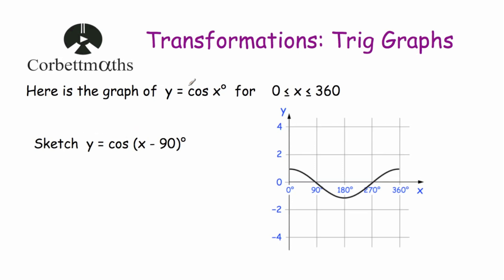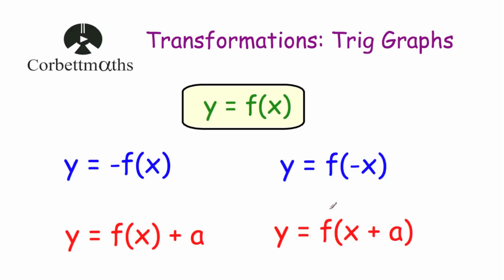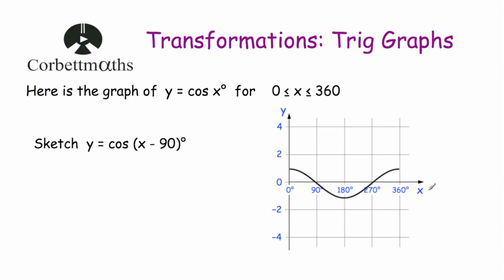Next, we've been asked to sketch y = cos(x - 90°), with minus 90 inside the brackets — a translation 90° to the right. The point (0°, 1) moves to (90°, 1); (90°, 0) moves to (180°, 0); (180°, -1) moves to (270°, -1); (270°, 0) moves to (360°, 0). For the start of the graph, cos(-90°) = 0, so moving it 90° to the right brings it to the origin. Drawing a smooth curve gives y = cos(x - 90°).